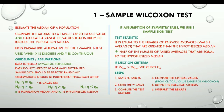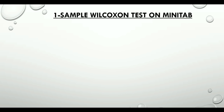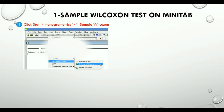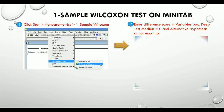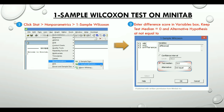Now let's quickly see how we conduct a one sample Wilcoxon test on Minitab. We click on Stat, Non-parametric, and One Sample Wilcoxon. We then enter the difference score in the variables box. We keep the test median at 0 and the alternative hypothesis at not equal to. Minitab normally performs the test at a 95% confidence level; if we wish to change this, we can do so in the confidence interval level box.